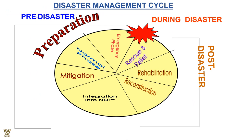The disaster management cycle has two main phases: pre-disaster and during disaster. In pre-disaster we can plan for it. During disaster — when it is happening — the focus is on emergency purposes: rescue, relief, rehabilitation, and reconstruction, along with mitigation, integration into national disaster planning, and returning to normal phases. There are basically three stages: pre-disaster, during disaster, and post-disaster — where we reflect on what we have learned and how things can be done better.